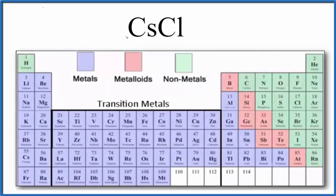In this video we'll look at whether CsCl, cesium chloride, is an ionic or covalent compound. The first thing we look at is whether we have metals and nonmetals here. So cesium, right here, that's a metal. Chlorine is right over here, that's a nonmetal.